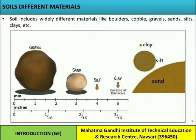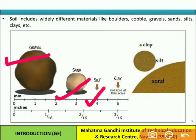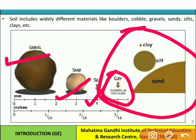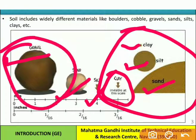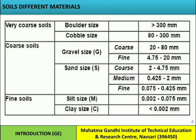Different types of soil materials: soil includes widely different materials like boulders, gravel, sand, silt, clay, etc. In the figure, I have shown some examples. Gravel is the biggest, then sand is smaller, then silt, and then clay. Clay is the smallest, silt is next, and gravel is the biggest.